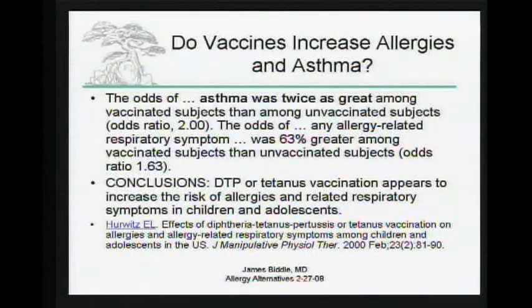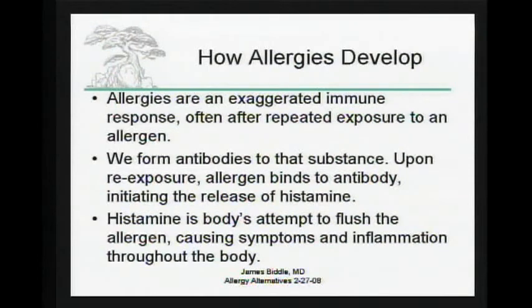One published study found that vaccinated children had twice the risk of asthma and 1.6 times the risk of allergies compared to those not vaccinated with the DTP — diphtheria, tetanus, and pertussis — or just the tetanus vaccine. Allergy is an exaggerated immune response that usually occurs after repeated exposure — never on the first exposure. You have to be exposed at least twice to become allergic. The more you're exposed to something, the more likely it is to become allergic. Whatever food you're eating the most of, or whatever foods are hidden in your food chain, are most likely to become allergenic.